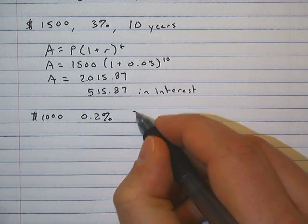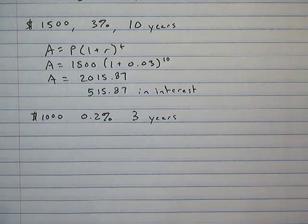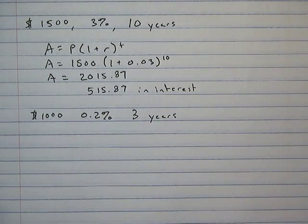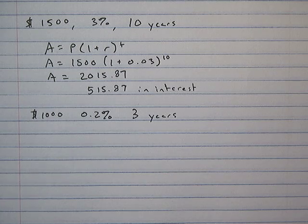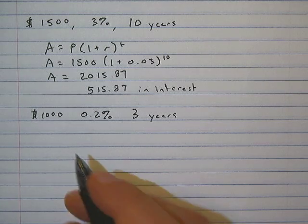$1,000 at 0.2% for three years. The reason I picked this percentage is because that's a realistic percent to get in a savings account right now.